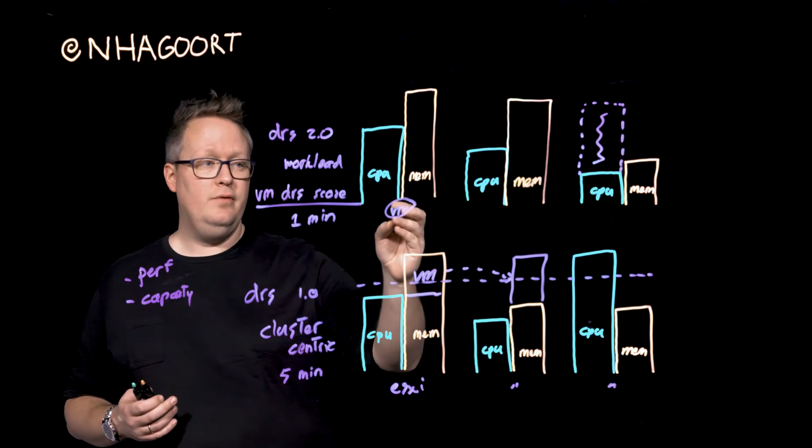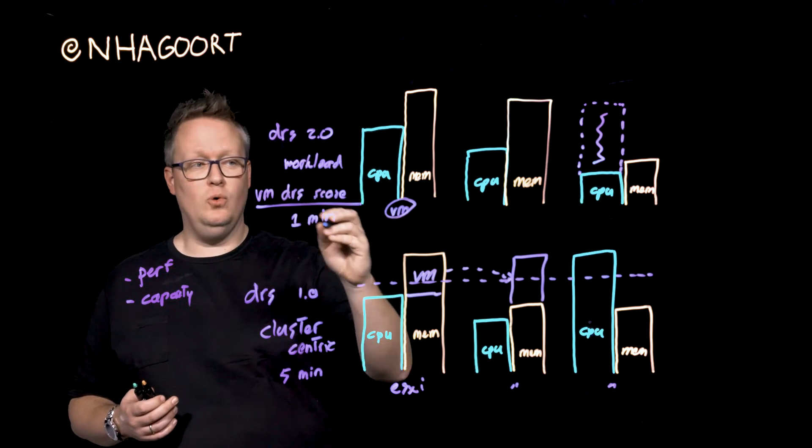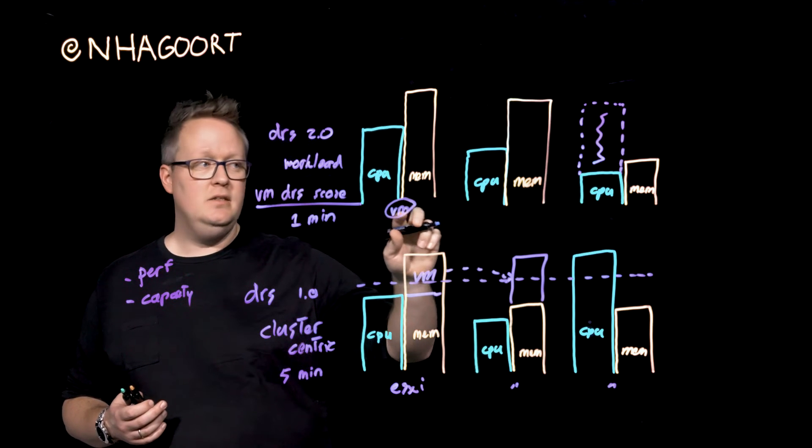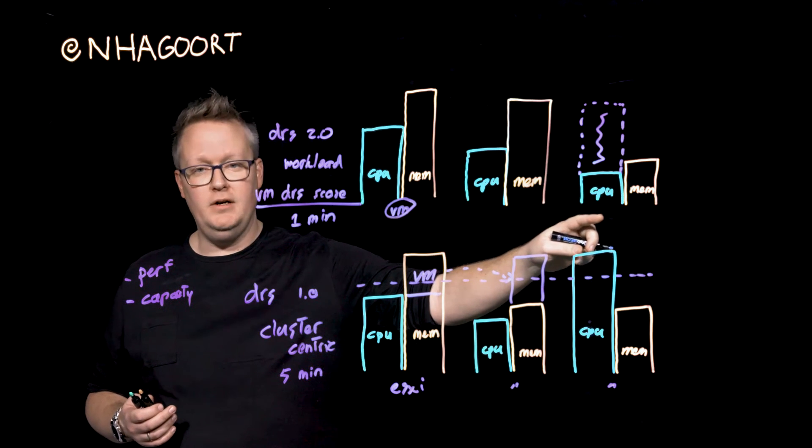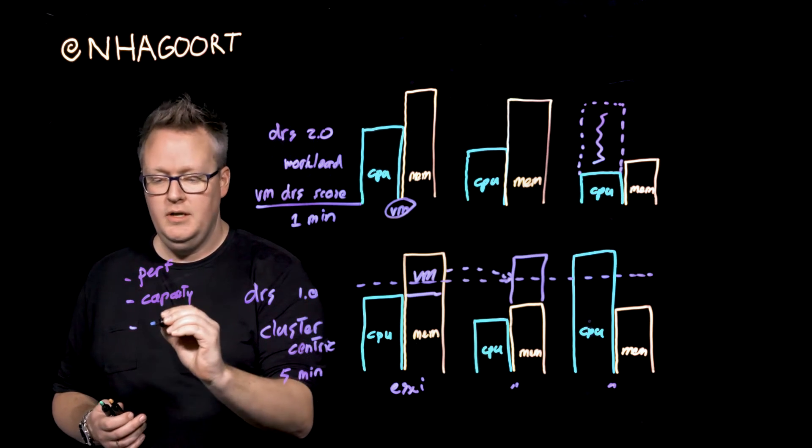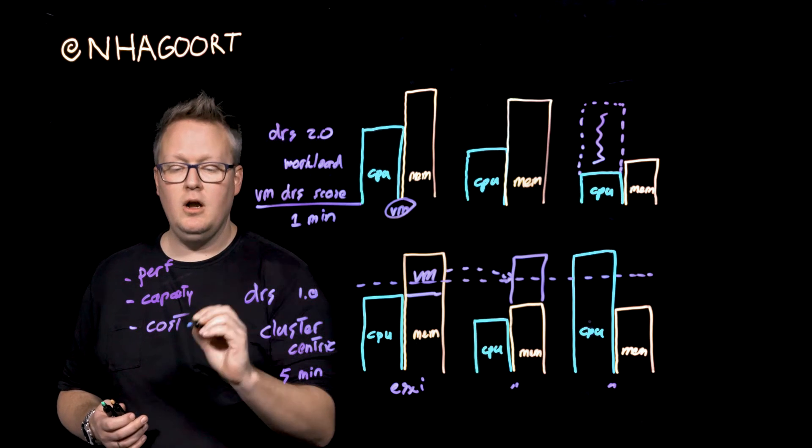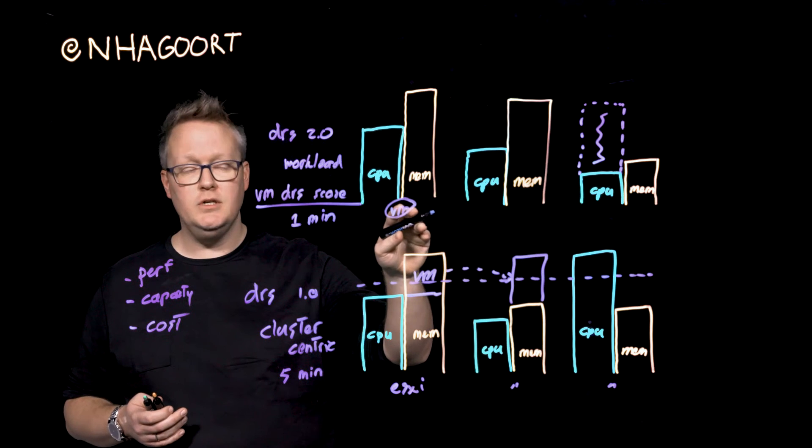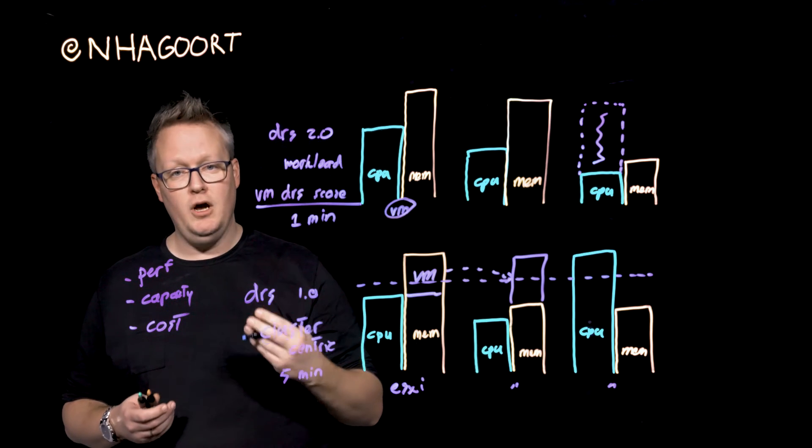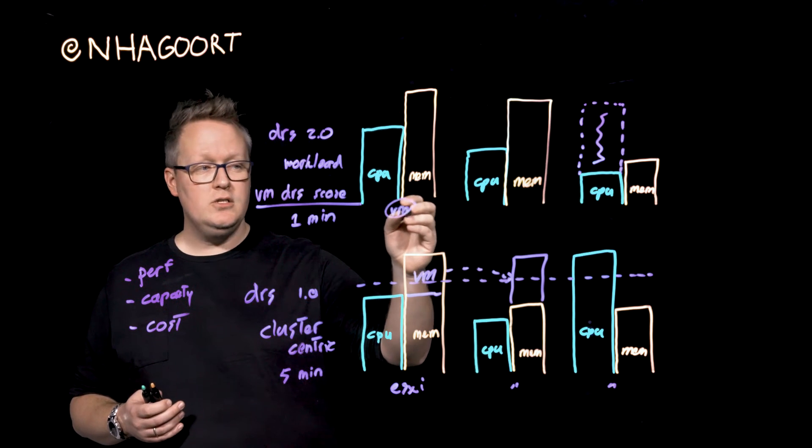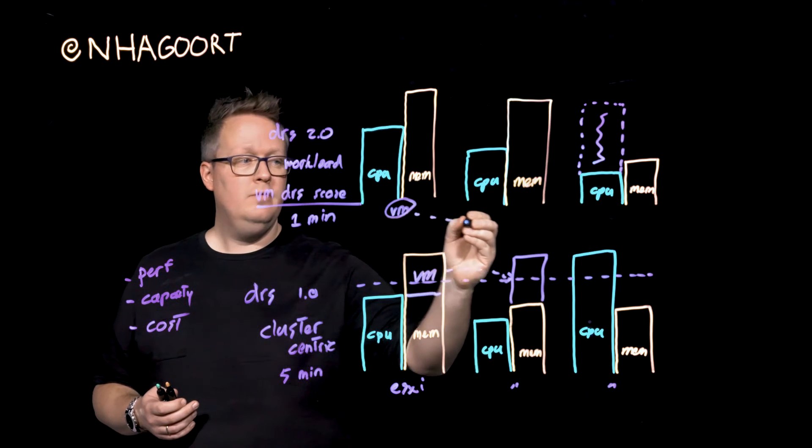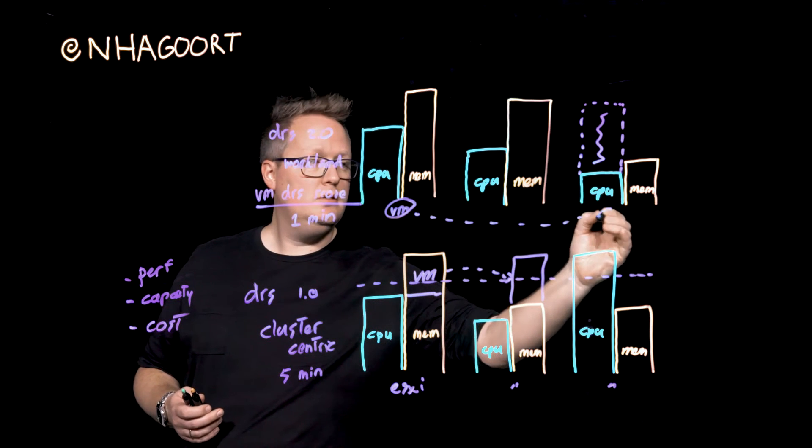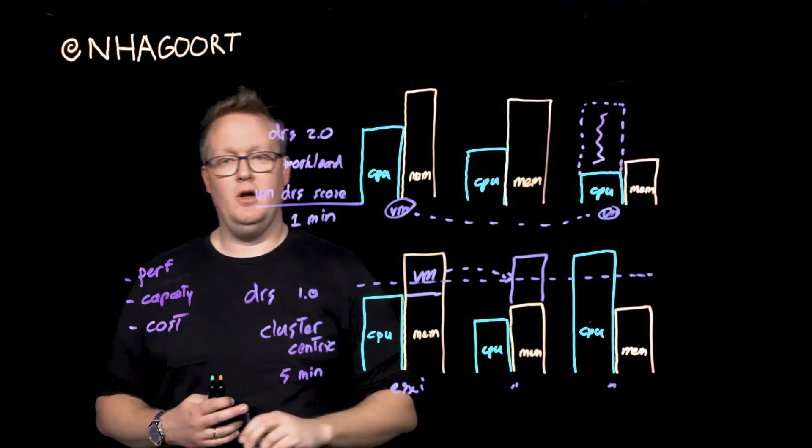So, whenever we have a virtual machine DRS score and we come up with, hey, this virtual machine is probably better off here, we'll also calculate the cost. The cost of moving that virtual machine with vMotion if DRS is set to fully automated, the cost of the migration from this host to this specific host.